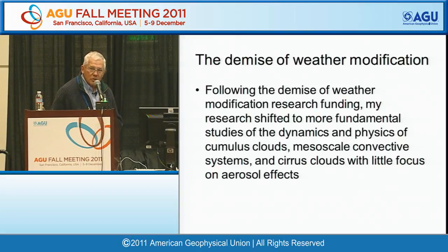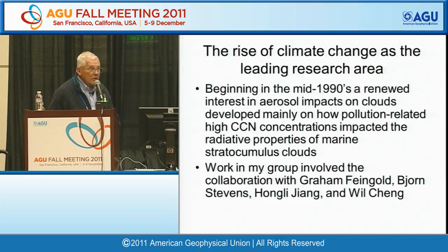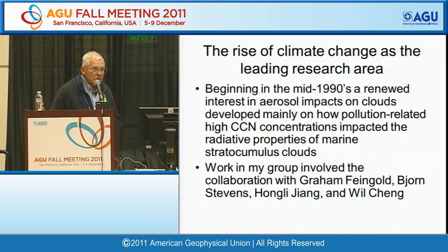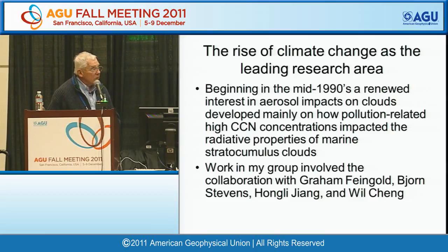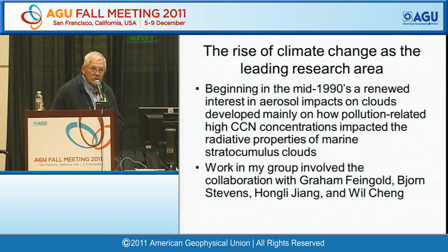The demise of weather modification research took place and I shifted my whole focus to basic research on convective storms and mesoscale convective systems. Then climate change came along and everybody got interested in how aerosols affect climate change — particularly how increased pollution aerosols might affect cloud albedo, the so-called Twomey effect and extensions of it by Bruce Albrecht. Beginning in the 1990s, we began more research on how CCN — cloud condensation nuclei — might affect clouds, in collaboration with Graham Feingold, Bjorn Stevens, Hong Li Zheng, and more recently Will Cheng.